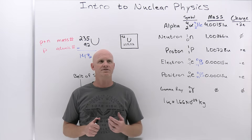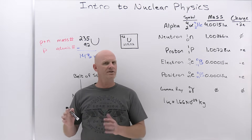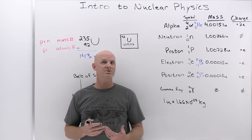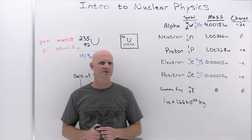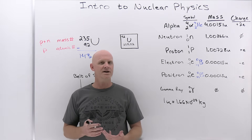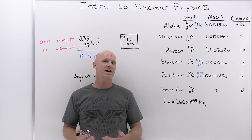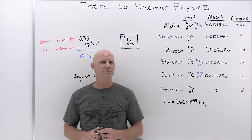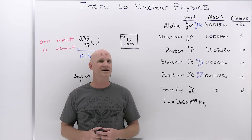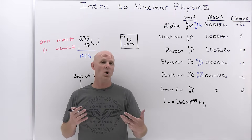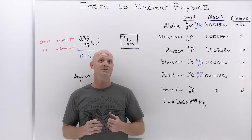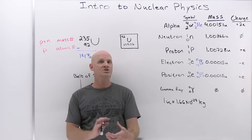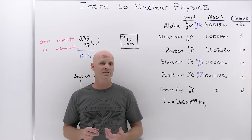Before going further, ask yourself: why are all those protons hanging out together in the nucleus? Neutrons are neutral, no problem there. But protons all have positive charge, so they should be experiencing electrostatic repulsion — they shouldn't want to stay together. The only conclusion is there must be a stronger force of attraction than that electrostatic repulsion, and indeed there is. It's called the strong force, or the strong nuclear force. It only operates at very, very short distances — on par with the size of the nucleus — and effectively drops to zero beyond that. At larger distances electrostatic repulsion dominates, but at these very short distances the strong nuclear force dominates.